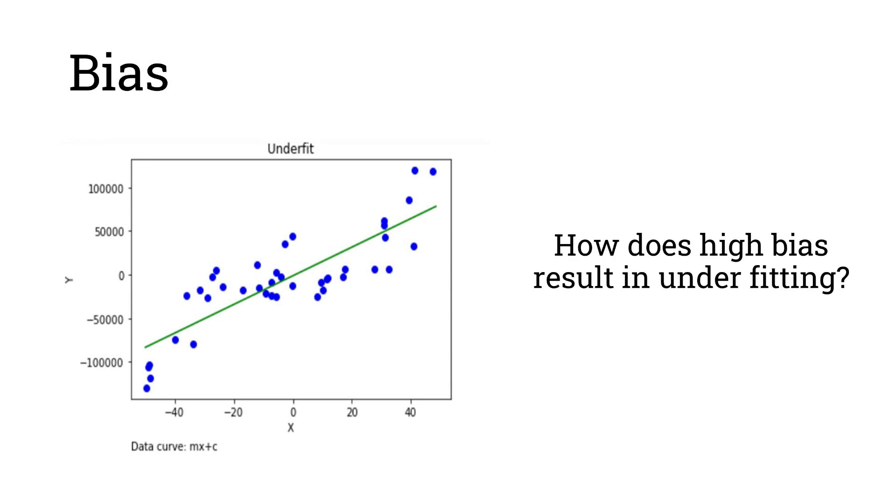How does high bias result in underfitting? Let us first understand a highly biased person. A highly biased person has a very simplistic mindset and they tend to label everything and they don't take into consideration all the parameters. Hence, most of the time their assumptions turn out to be wrong.